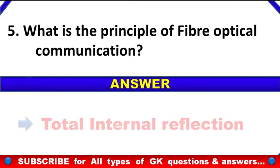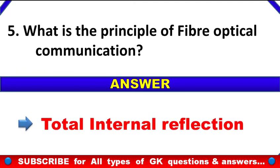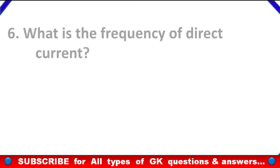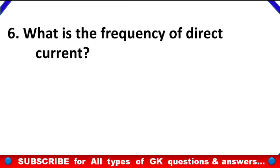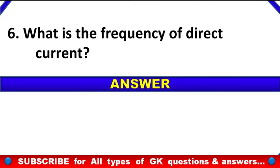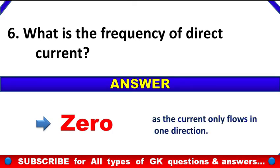What is the frequency of direct current? Answer: Zero. As the current only flows in one direction, so the frequency of direct current will be zero.